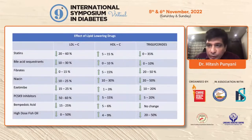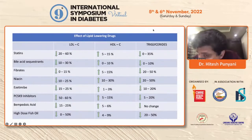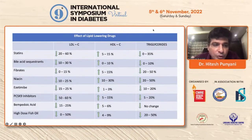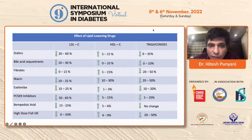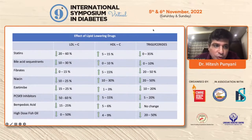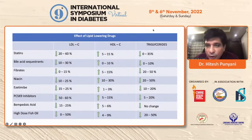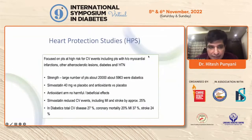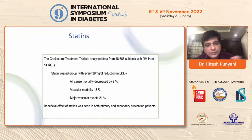Coming to lipid-lowering drugs — these are the drugs available, most covered in this table. Statins stand foremost; they are among the most potent drugs available to us. All these drug classes have contributions to three main components: LDL cholesterol, HDL cholesterol, and triglycerides. We'll highlight statins and briefly touch on the rest of the drug classes.